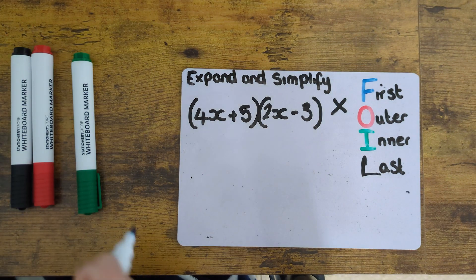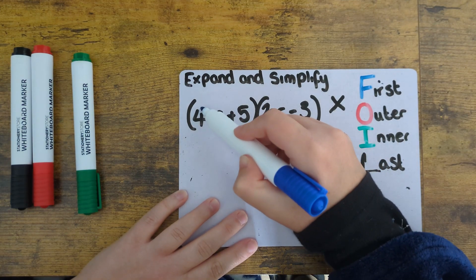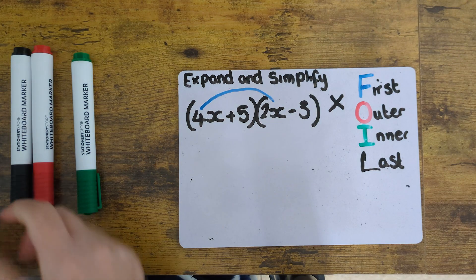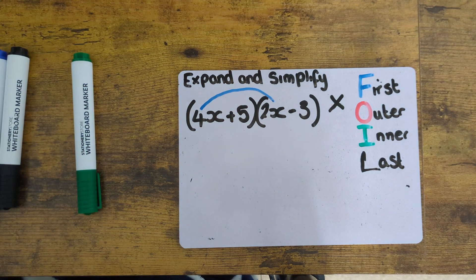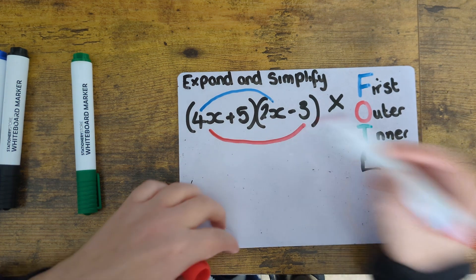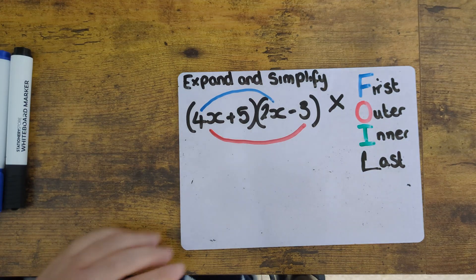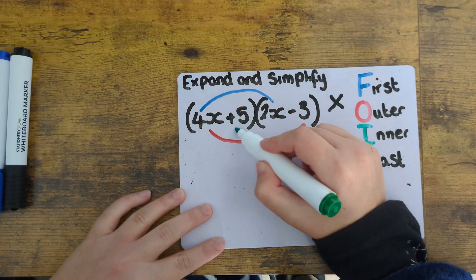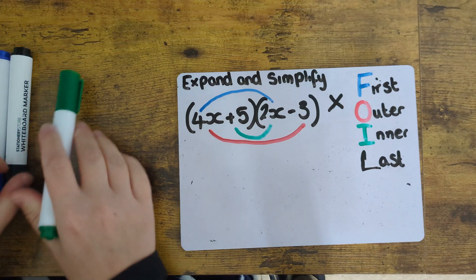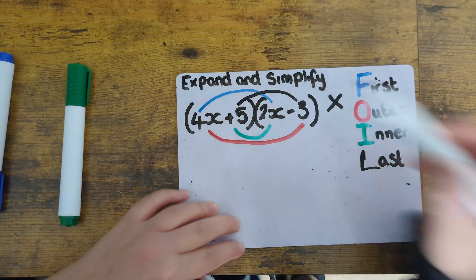Now we'll try this one, as we've got both positive and negative terms. We'll join the first terms up — in this case, 4x and the 2x. Then the outer terms — the 4x and the minus 3. Then the inner terms — the 5 and the 2x. And finally the last terms — the 5 and the minus 3.